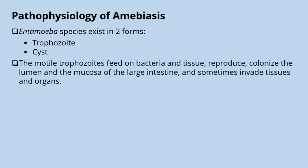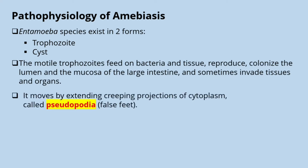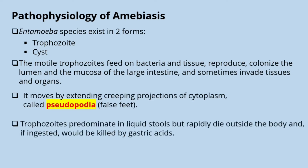The motile trophozoites feed on bacteria and tissues, reproduce, and colonize the lumen and mucosa of the large intestine, and sometimes invade tissues and organs, causing extra-intestinal infections. The trophozoite moves by extending creeping projections of cytoplasm called pseudopodia, or false feet. Trophozoites predominate in liquid stools but rapidly die outside the body, and if ingested would be killed by gastric acids — they are known as acid labile.